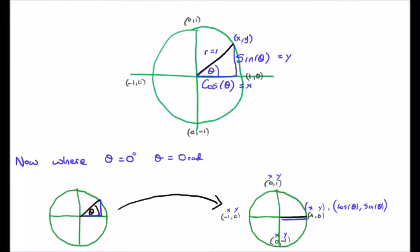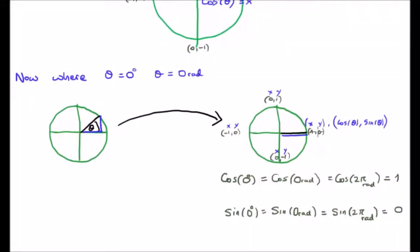What happens when theta equals 0 degrees or 0 radians? We bring the line right down to the x-axis, so x has the value of 1 and y has the value of 0. Since x corresponds to cos theta and y corresponds to sin theta, the cosine of 0 degrees — or 0 radians — is equal to 1, which is also equal to cosine of 360 degrees or 2π radians. Similarly, the sine of 0 degrees or 0 radians is equal to 0, which is also equal to the sine of 360 degrees or 2π radians.